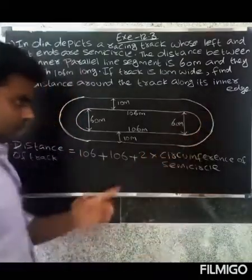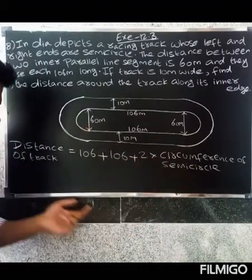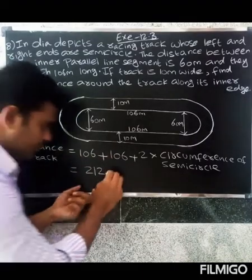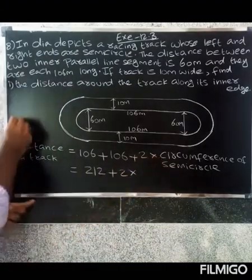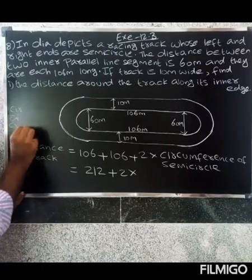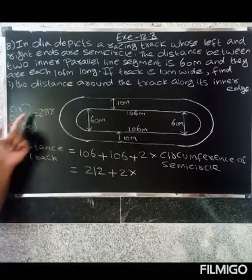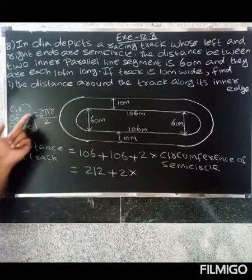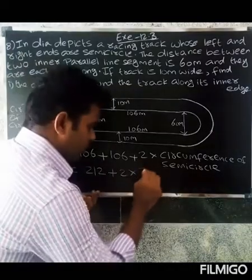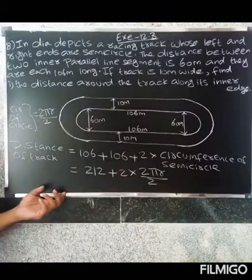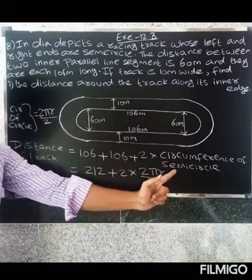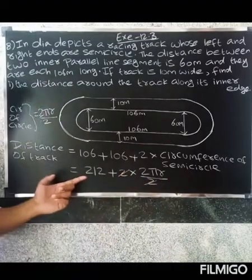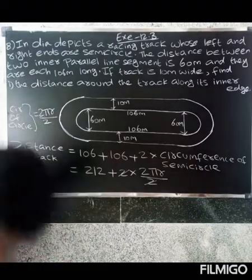Two into circumference of semicircle. The circumference of a circle formula is 2πr. Since it is a semicircle, we divide by two. So two into (2πr divided by two) simplifies, and the two cancels, giving us 212 plus 2πr.